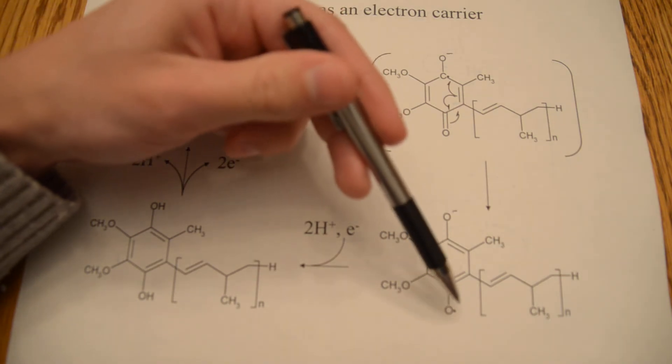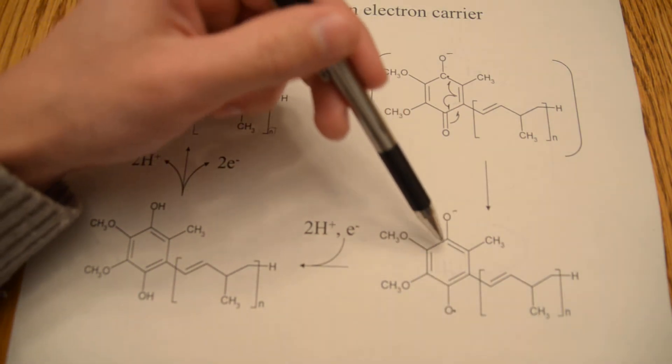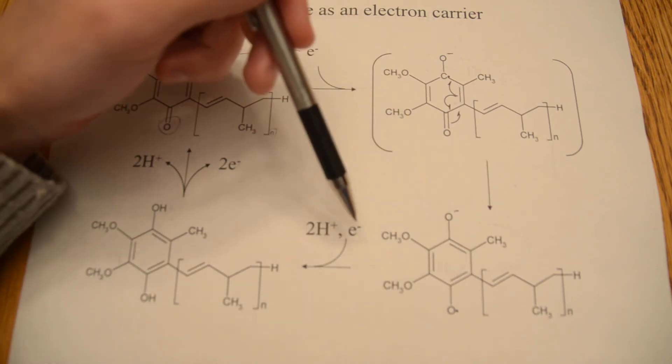The reason that it can stay in this radical form, it just stays here for a short time, but the reason that it can accept this radical form is because of this nice aromaticity in the ring here.